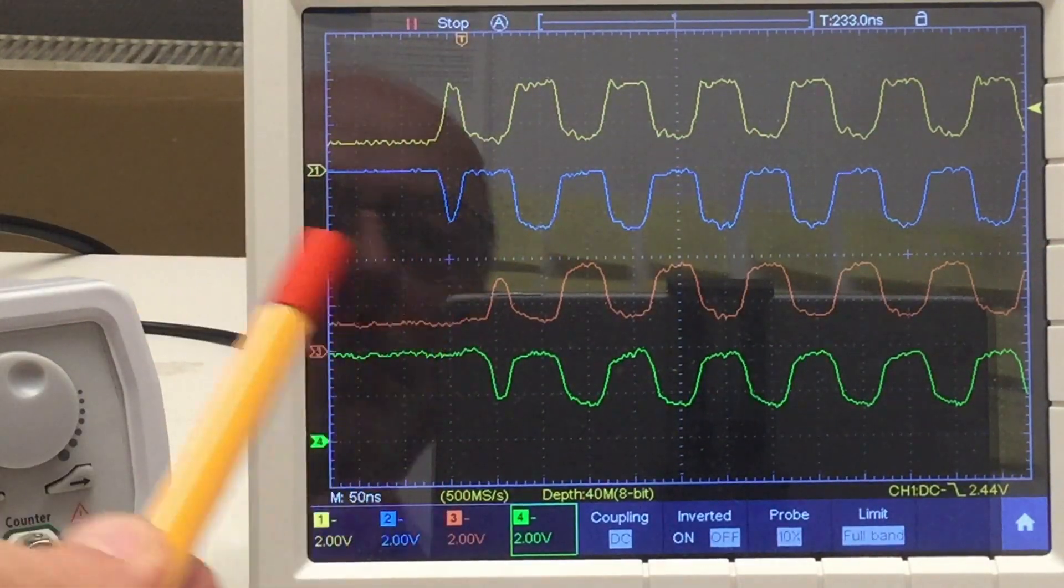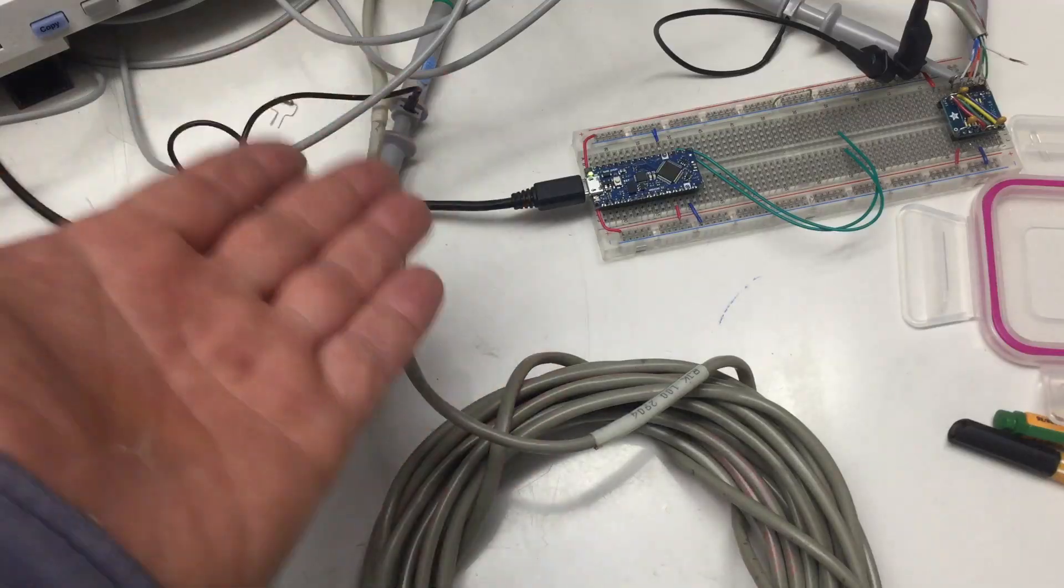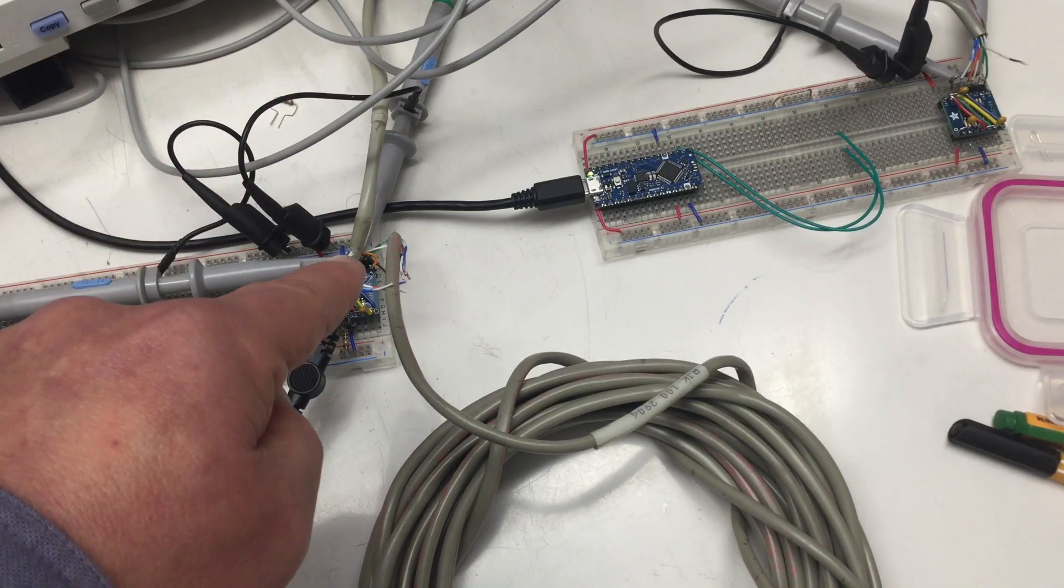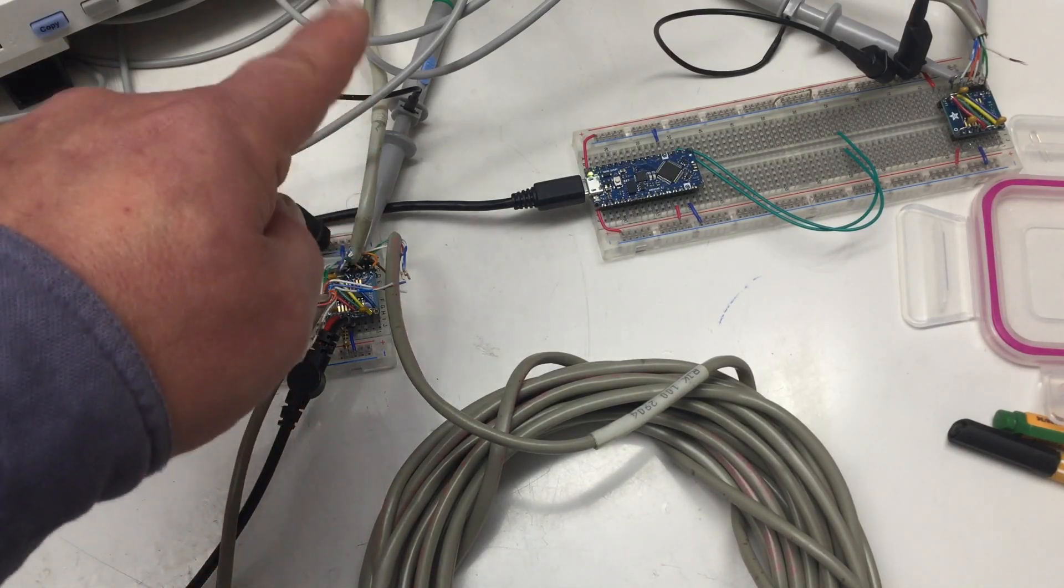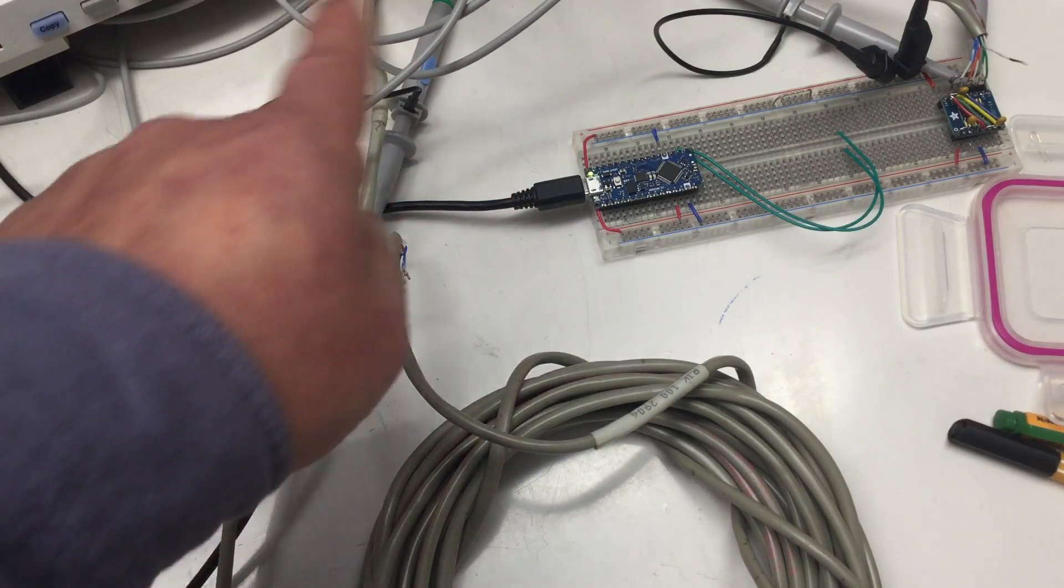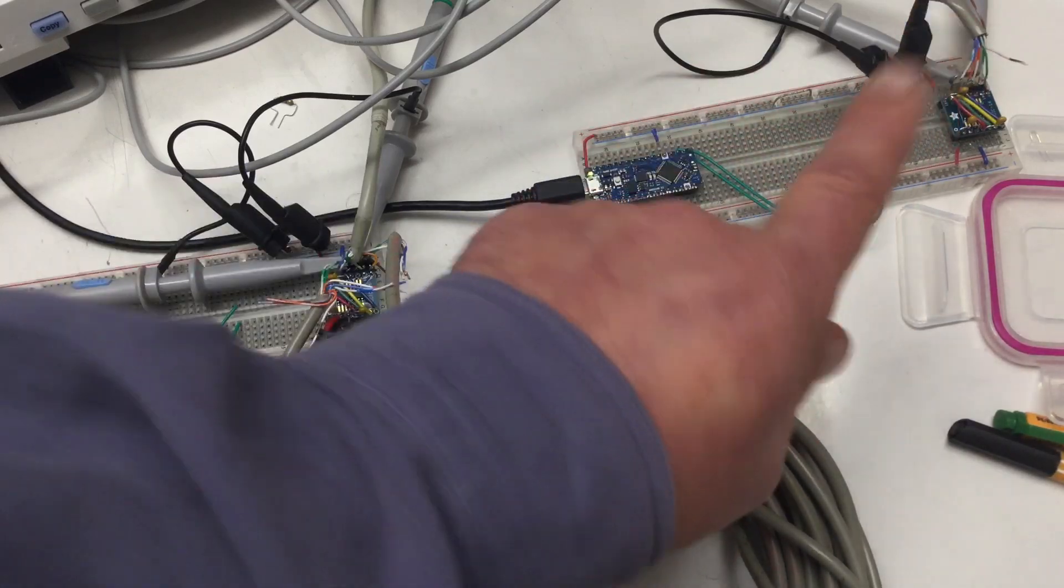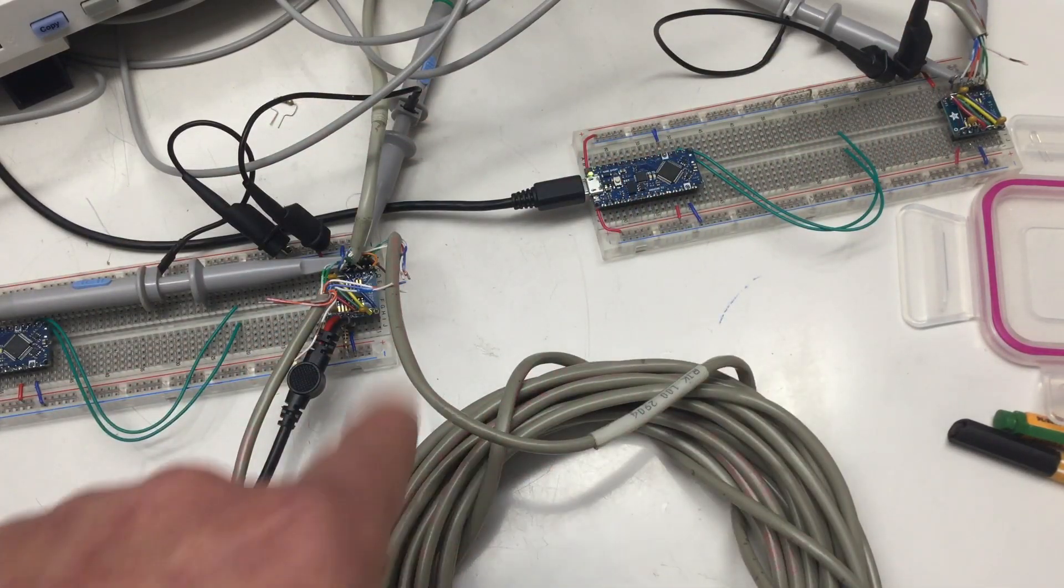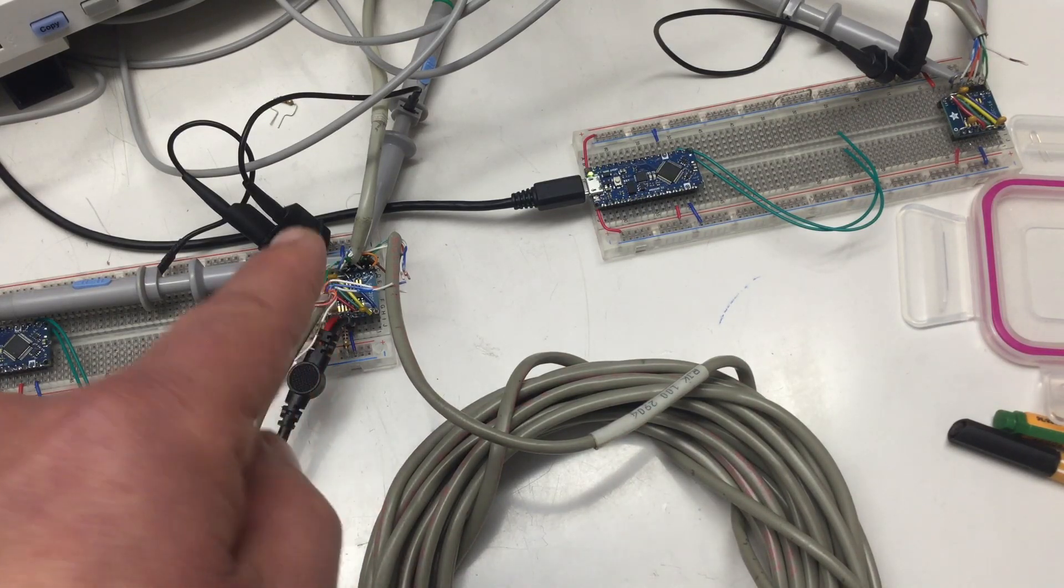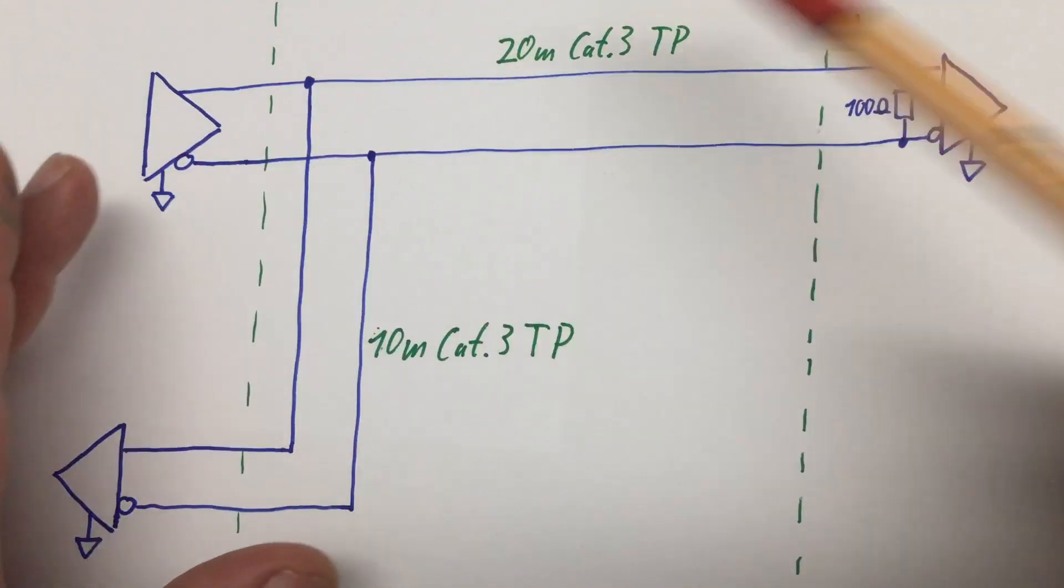As threatened, I mixed things up quite a bit. So, our transmitter here on the left side is now transmitting into the 20 meter cable and the 10 meter cable. The 20 meter cable still goes behind the oscilloscope somewhere into our right-hand side receiver, receiver one. And the 10 meter cable is looping back into our left-hand breadboard into the receiver two.